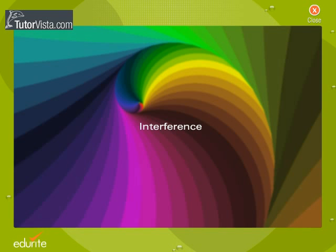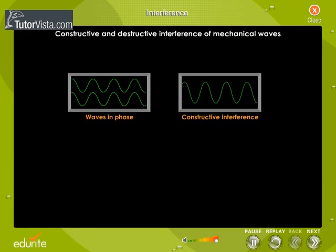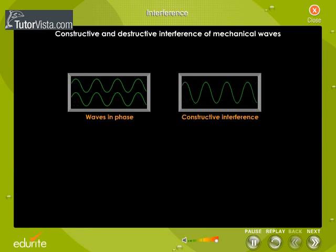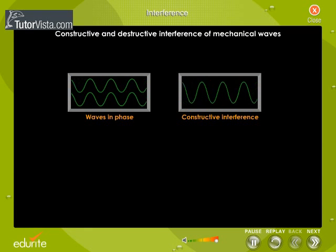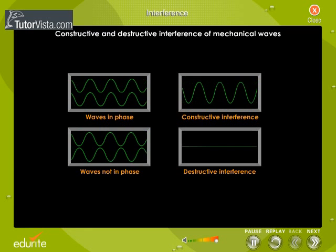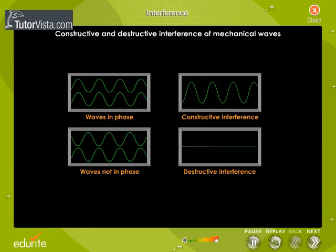Interference. We know that two mechanical waves of the same frequency can interfere constructively if the peaks of these waves are travelling in phase, and destructively interfere if the waves are not in phase.